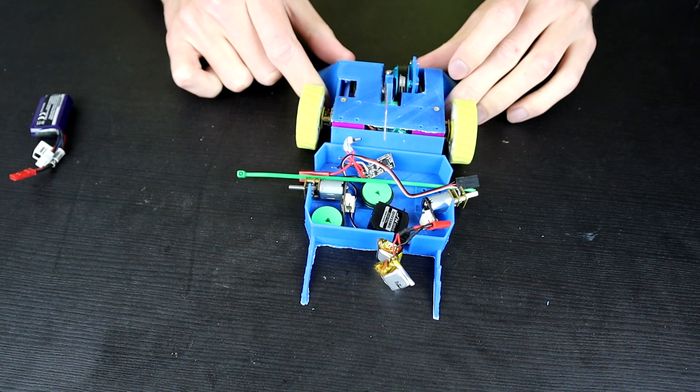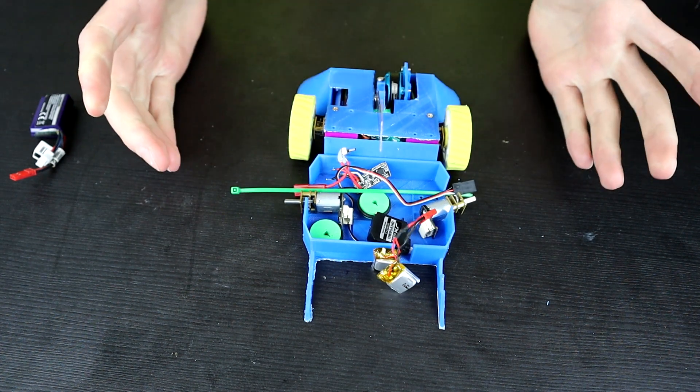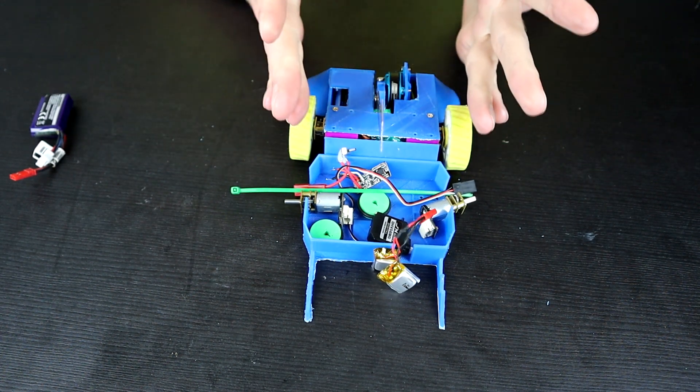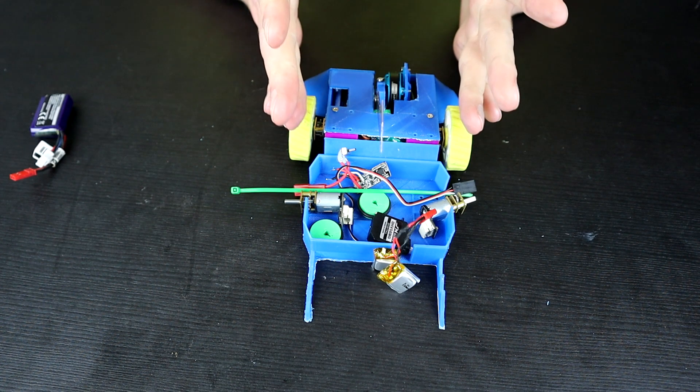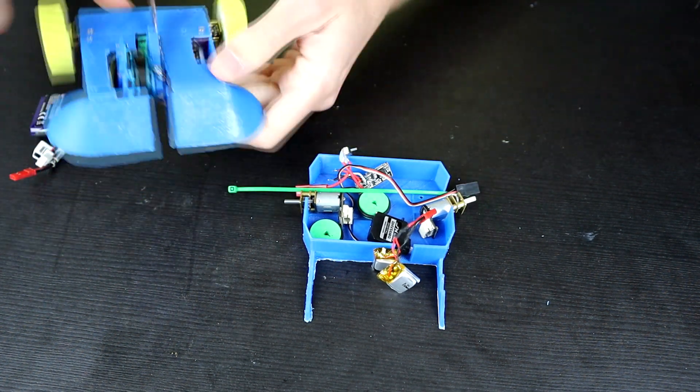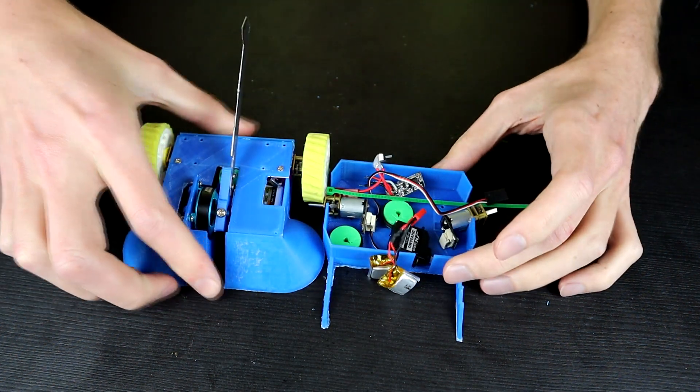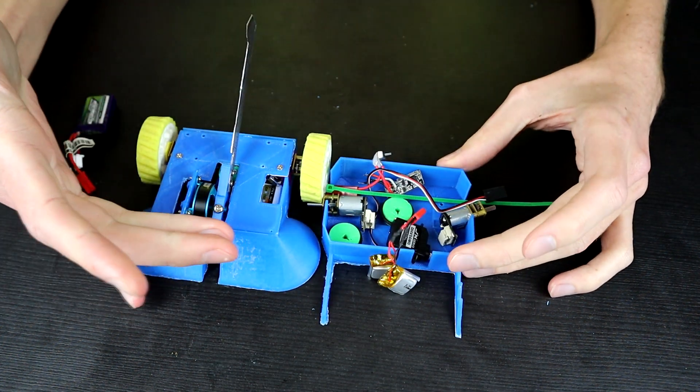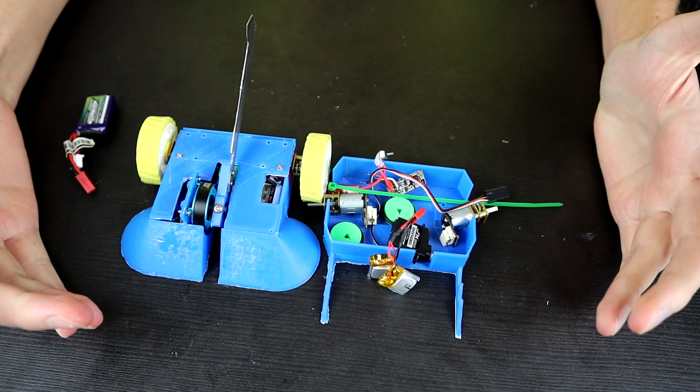Also I would say just for comparison's sake because we are using antweight components this thing isn't actually that small. This is Vera version 2 and as you can see it's about as wide as Vera version 2 maybe a little bit slimmer by the time the wheels are on.